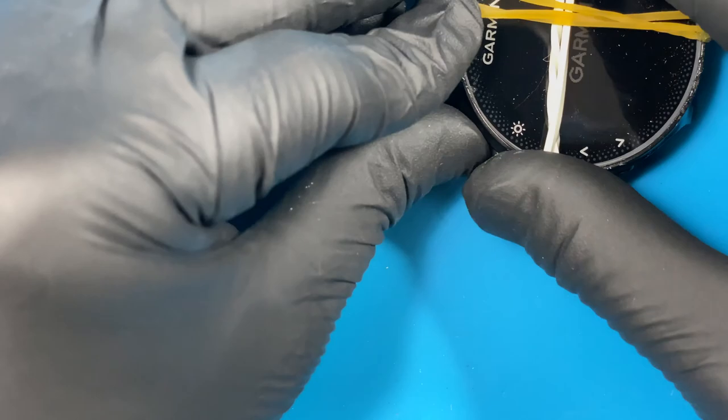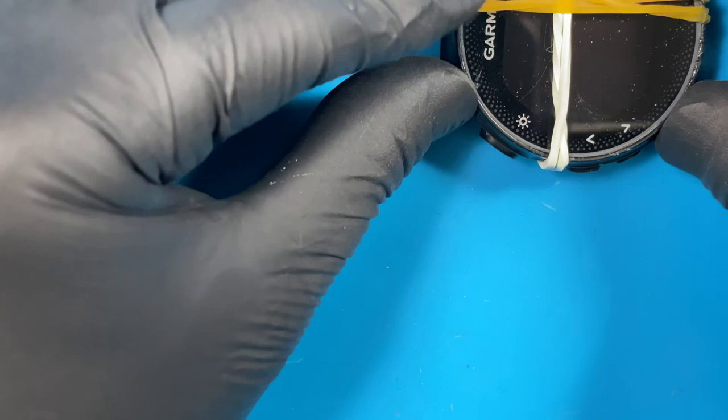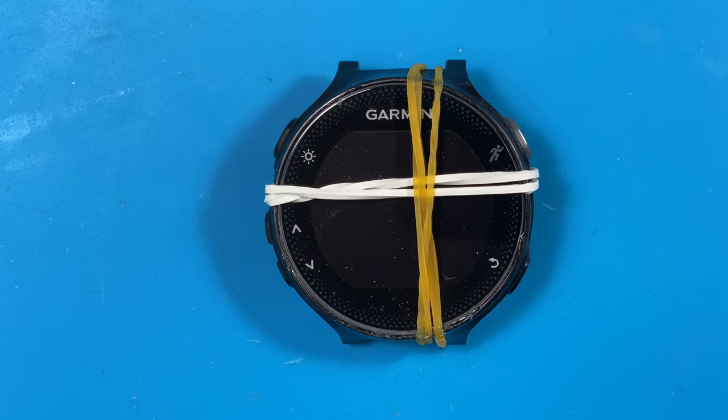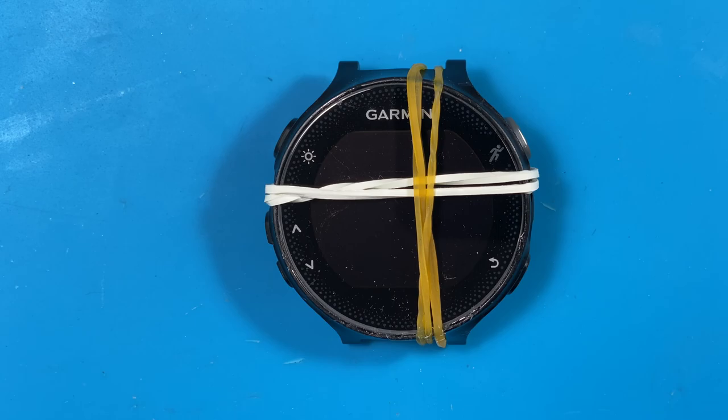At this point, the repair is pretty much done. All you have to do is clean off the remaining residue from the adhesive. Use a little bit of alcohol for that. Hopefully this was helpful for you. If you have any questions, just leave a comment and I'll try to get back to you as soon as possible. You're all set. Have a good one.